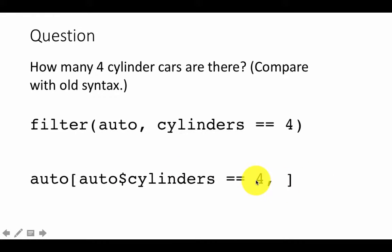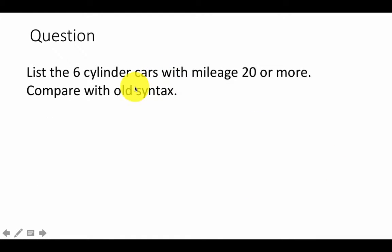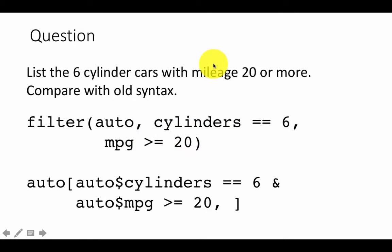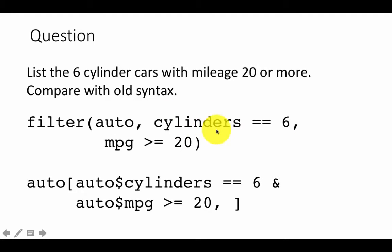Now let's list the six-cylinder cars with mileage of 20 or more, and compare with the old syntax. With dplyr: filter(auto, cylinders == 6, mpg >= 20) — we just put a comma and add the next condition, or we could use & and get the same result. The old syntax looks like: auto[auto$cylinders == 6 & auto$mpg >= 20, ]. With a data frame a comma has a different meaning, so you have to use & and repeat the data frame reference each time.